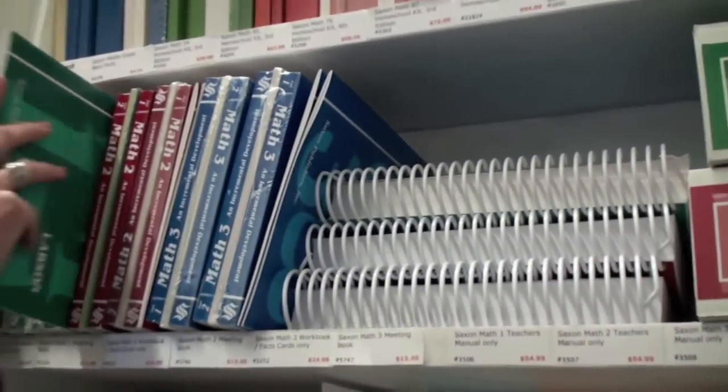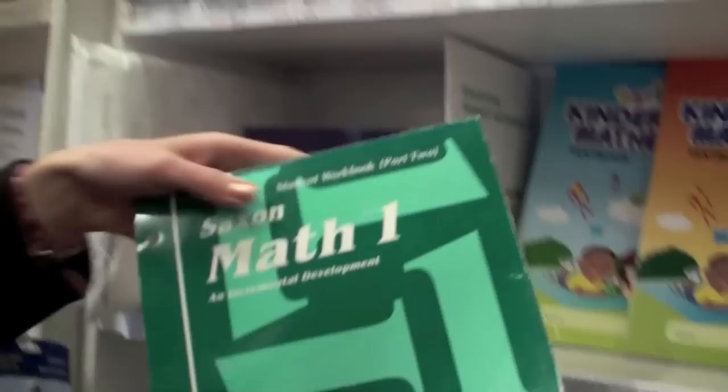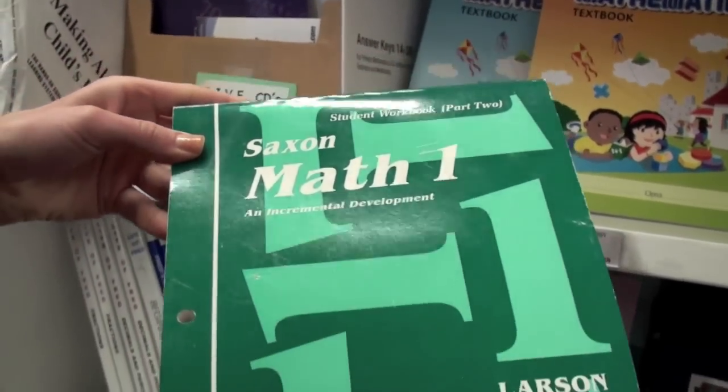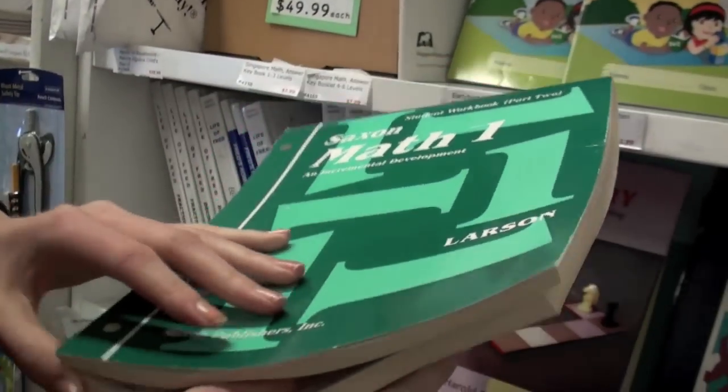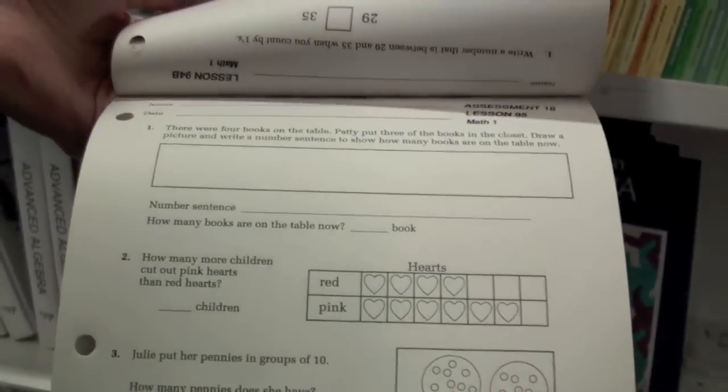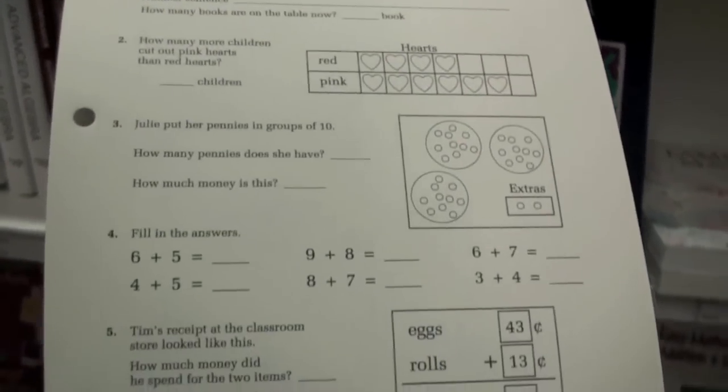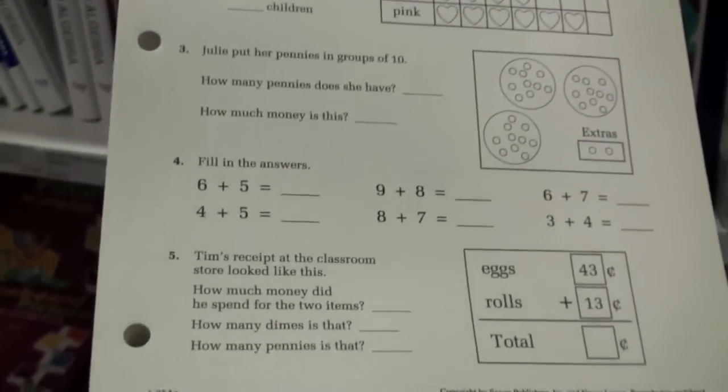Let me show you what it looks like inside. This is Saxon math for first grade. This is one of the student workbooks. Here's a sample lesson. It's all in black and white. It's thorough, concise and pretty self-explanatory.